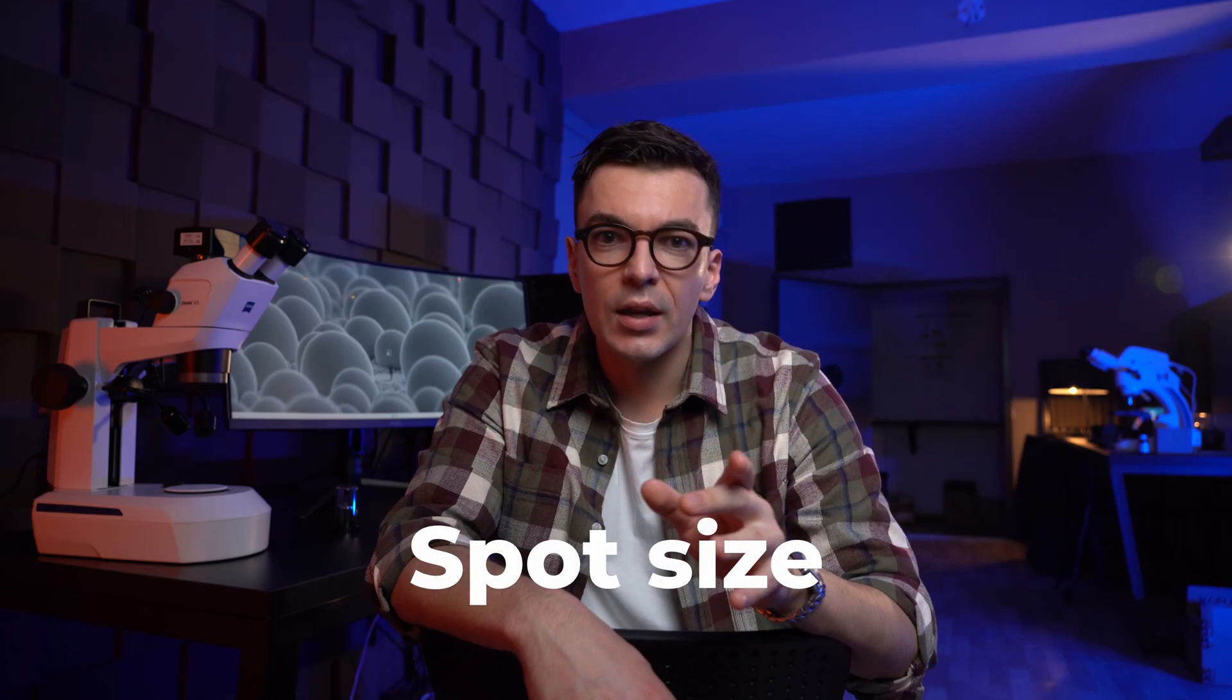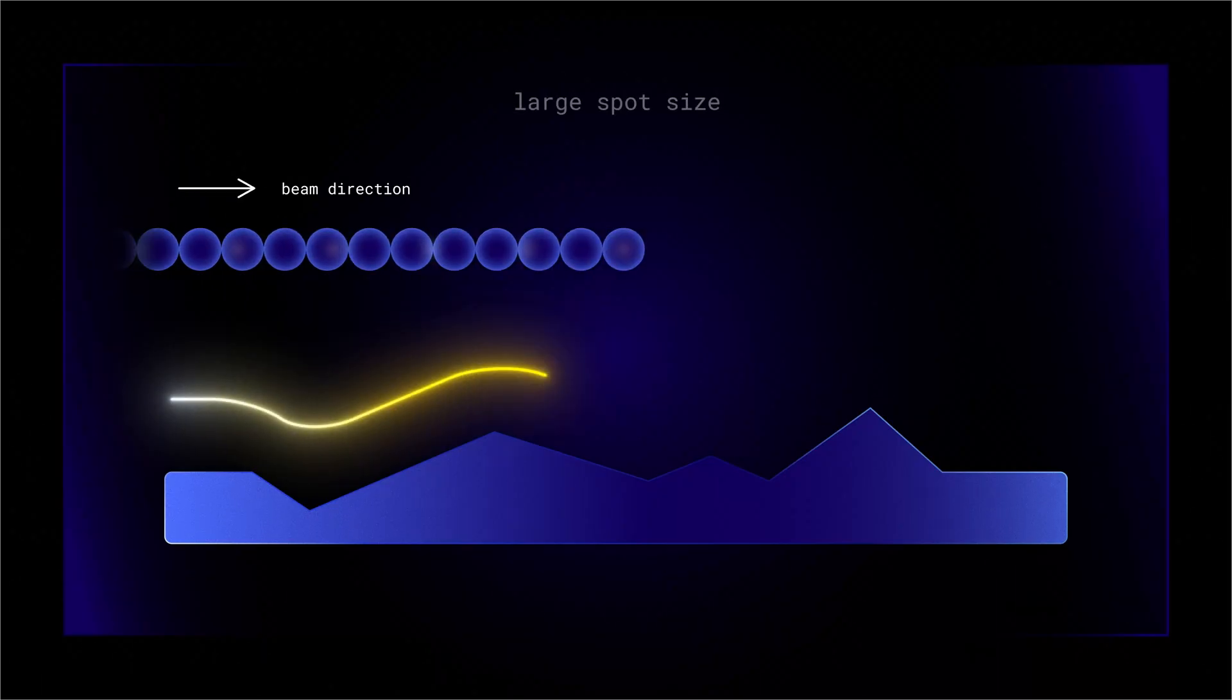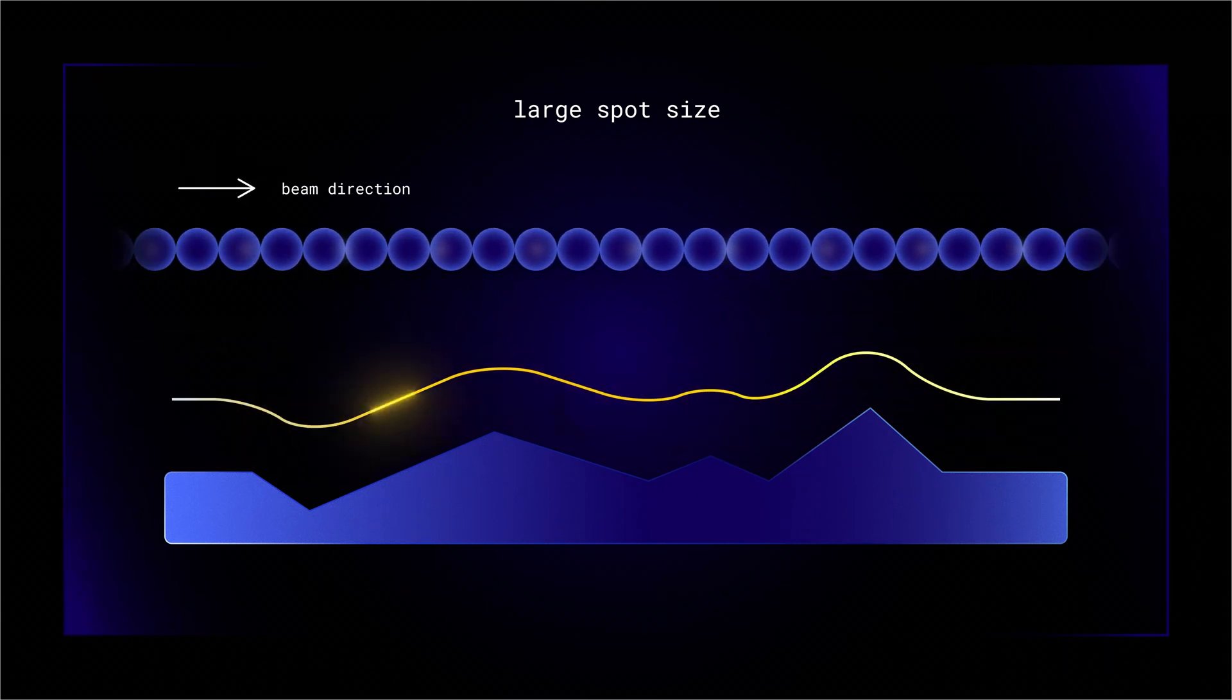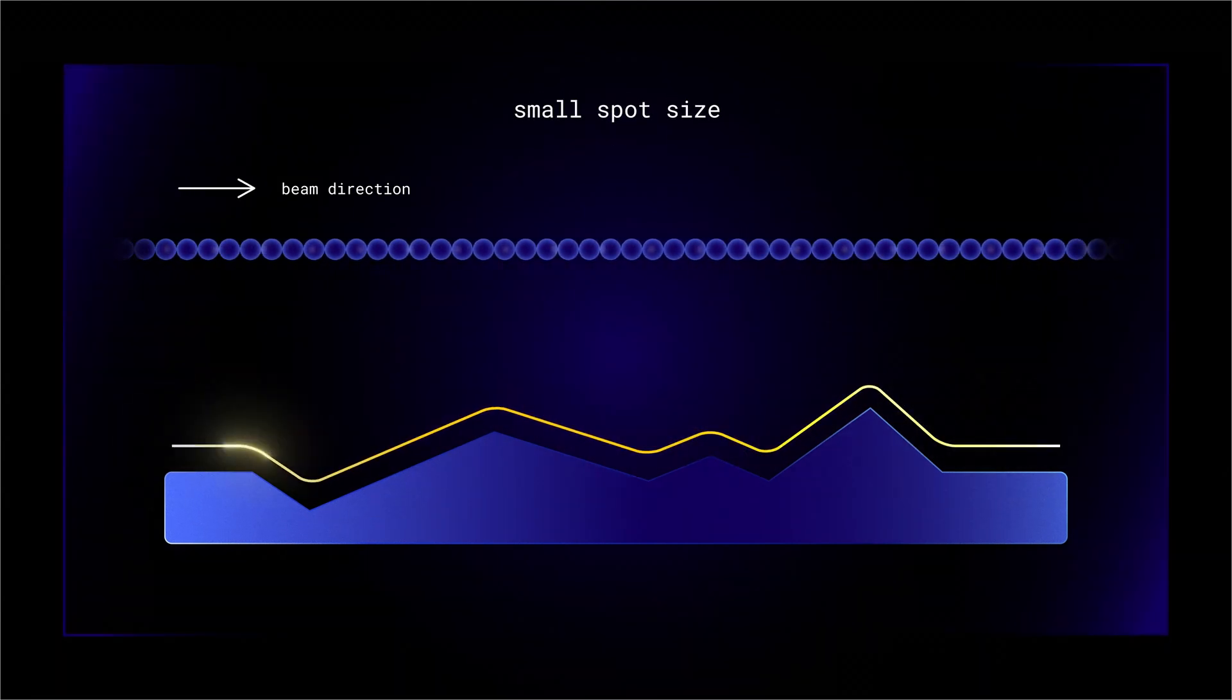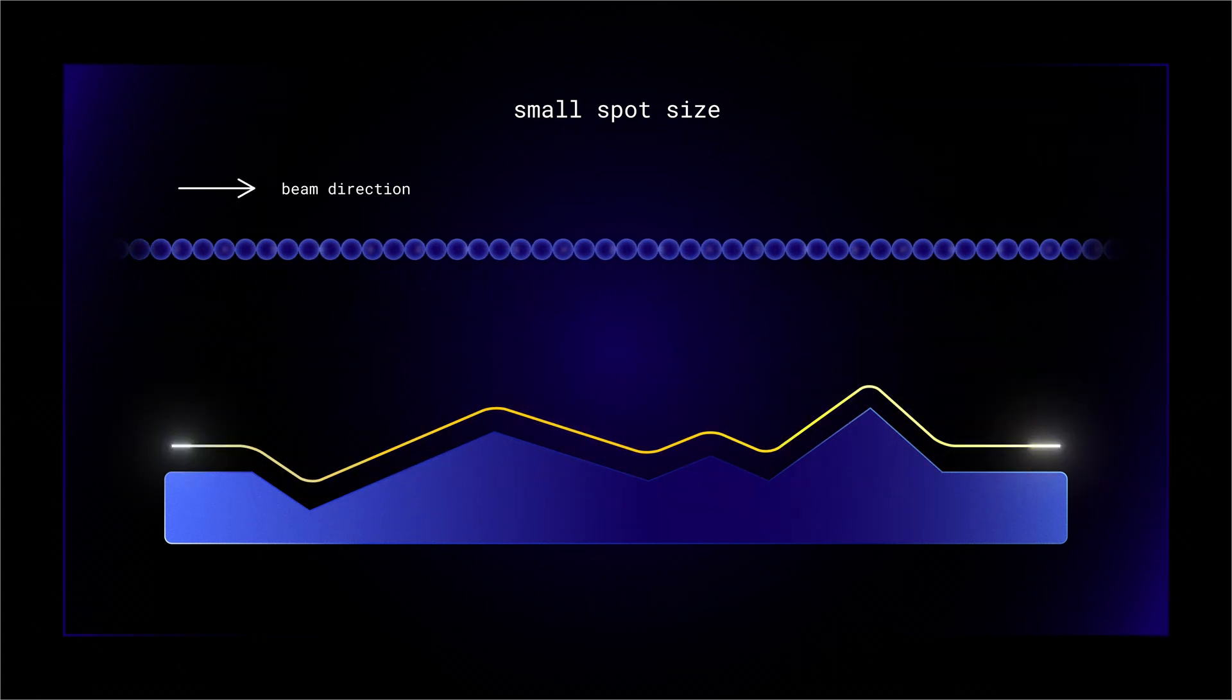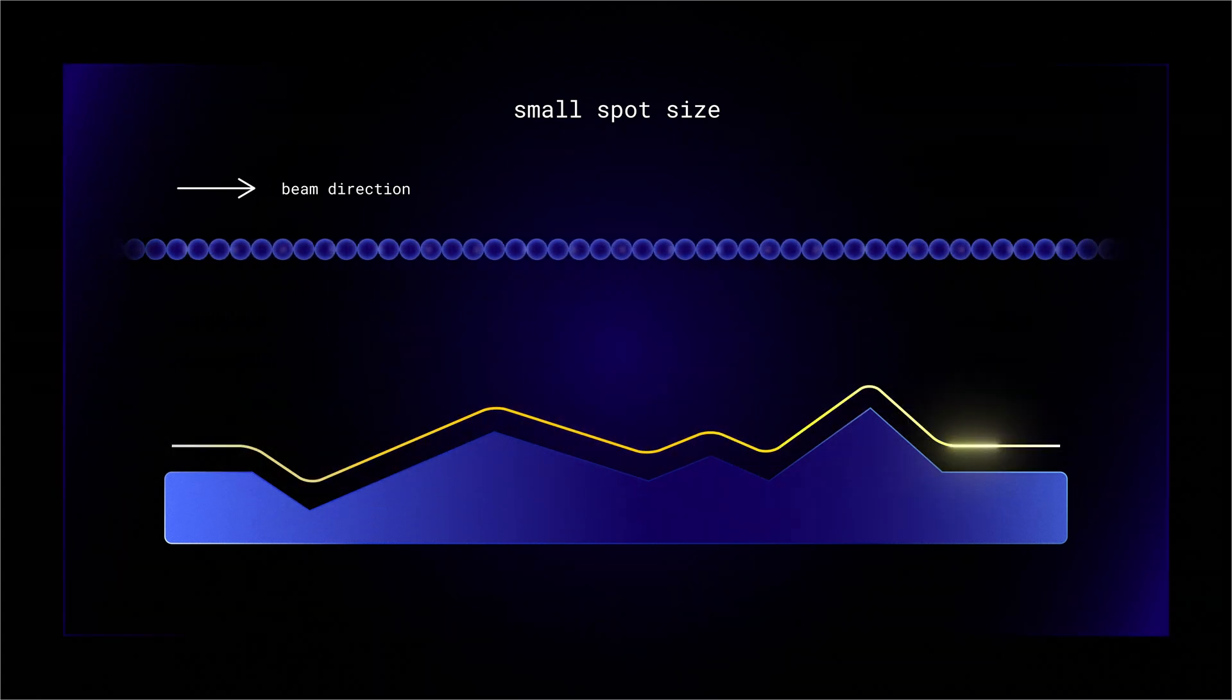Spot size. It's a cross-sectional diameter that the cone of the beam makes on the surface of the sample. It affects the resolution of the image and the number of electrons generated. The lower spot size, the higher the resolution but darker the image. In alpha software this slider is inverted.